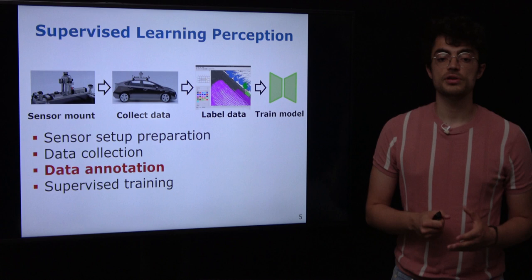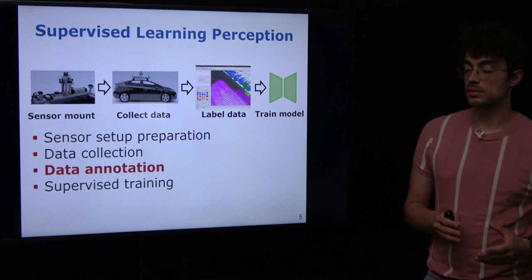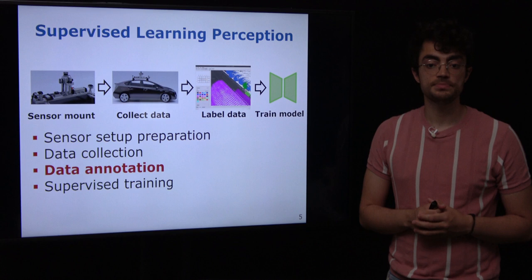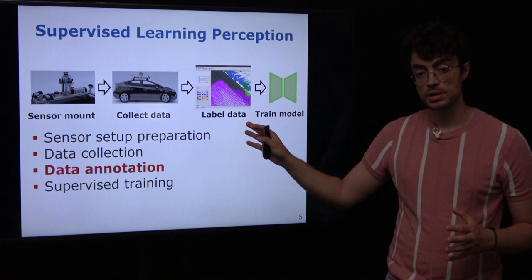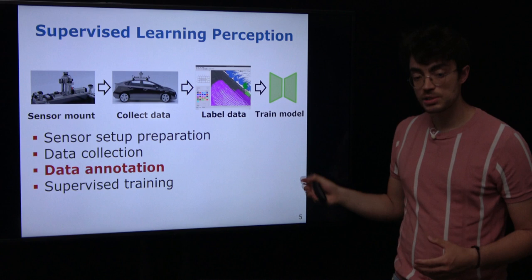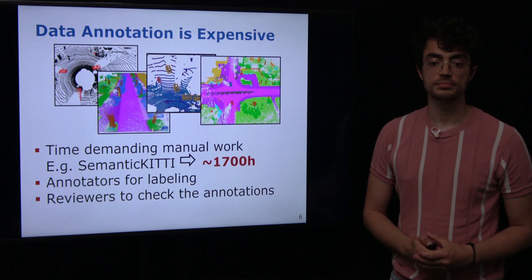For such learning-based methods, before deploying to the real world a series of important steps are needed to train the network. First a sensor mount needs to be prepared and set up, then we mount the sensor on top of a car, drive around the streets, and collect as much data as we want. After collecting this data we have to label it, and this labeling process is currently the bottleneck. After we label this data, we can finally train the model and then deploy it to a real-world environment.